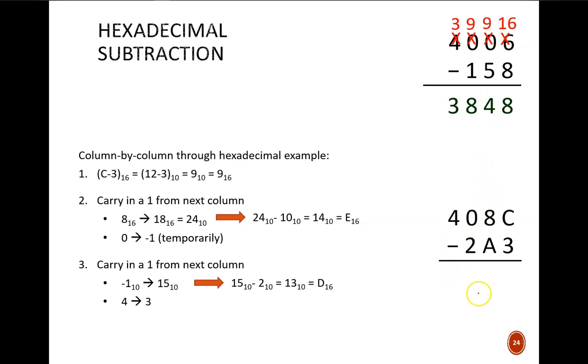Let's explore this hexadecimal example in more detail. The first column is straightforward. C minus 3 just means 12 minus 3 which produces a 9. No carries here. The next column is more interesting.